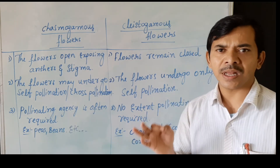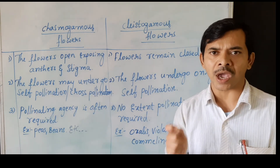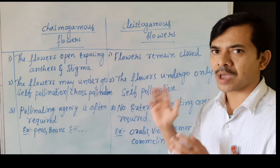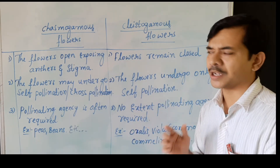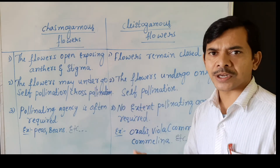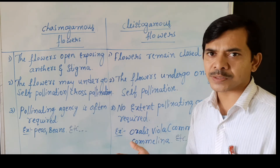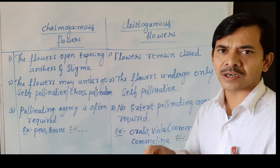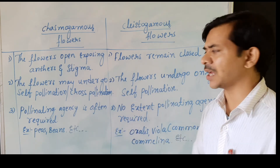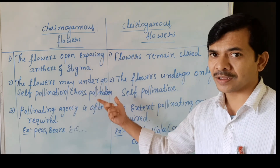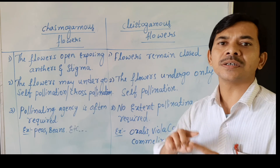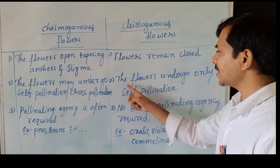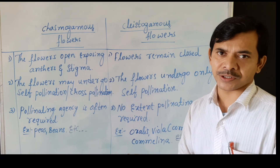Cleistogamous flowers never support cross-pollination or allogamy under any condition. The flowers remain closed, which is why they do not support cross-pollination. Chasmogamous flowers may undergo self-pollination or cross-pollination because they are well-exposed. In cleistogamous flowers, the male and female reproductive structures are completely enclosed, so they undergo only self-pollination.